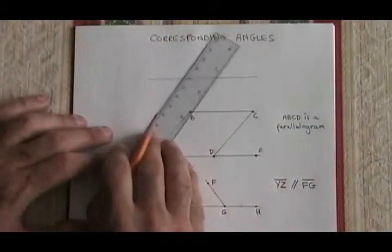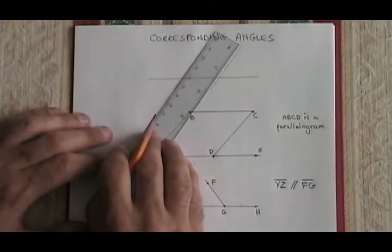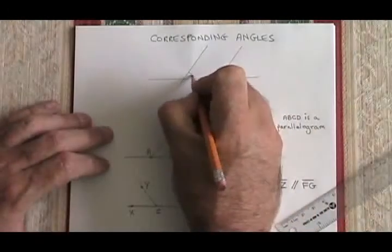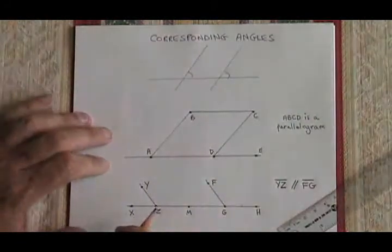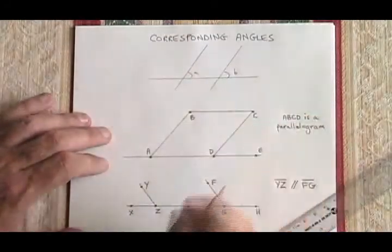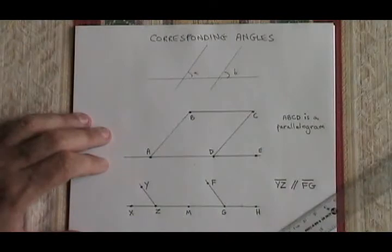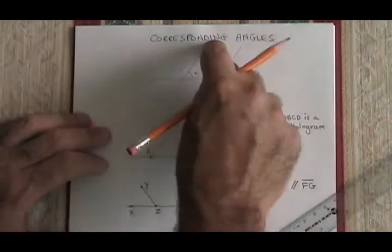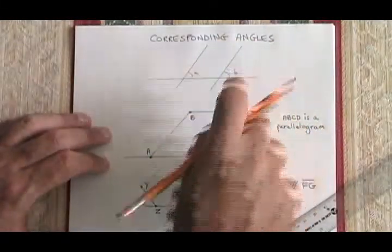We know that those two lines are parallel because I drew them on either side of this ruler. What this means is that angle A and angle B must be equal in measure. They are corresponding angles and you can see visually what corresponding means.